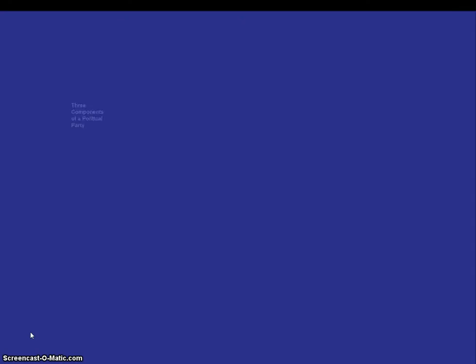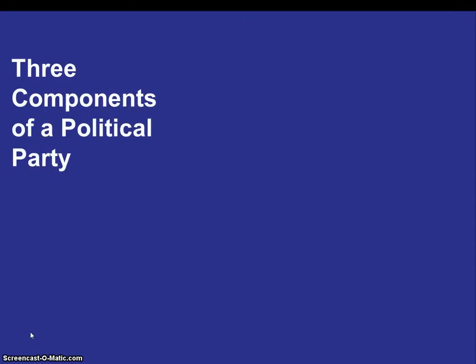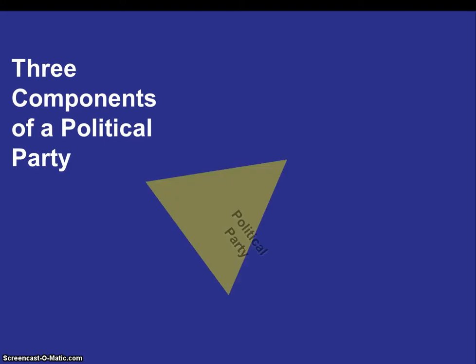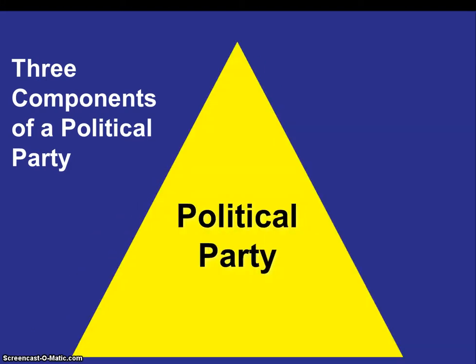How is a political party structured? There are three components or elements of political parties. First is the party in the electorate. The party in the electorate is the rank-and-file membership of the political party. In American politics, however, party membership is very loosely defined.